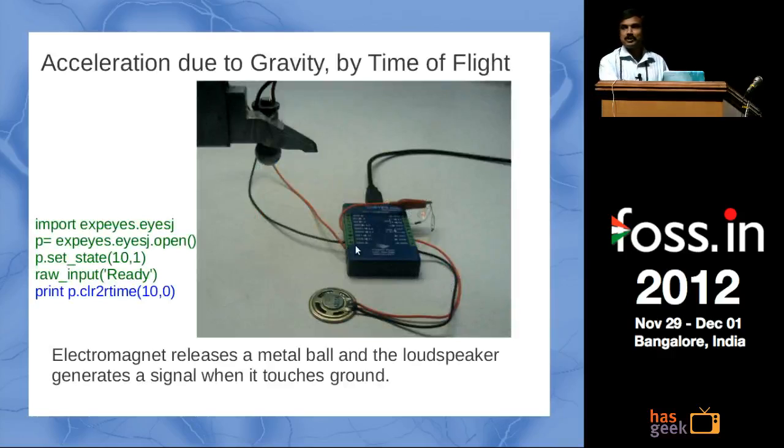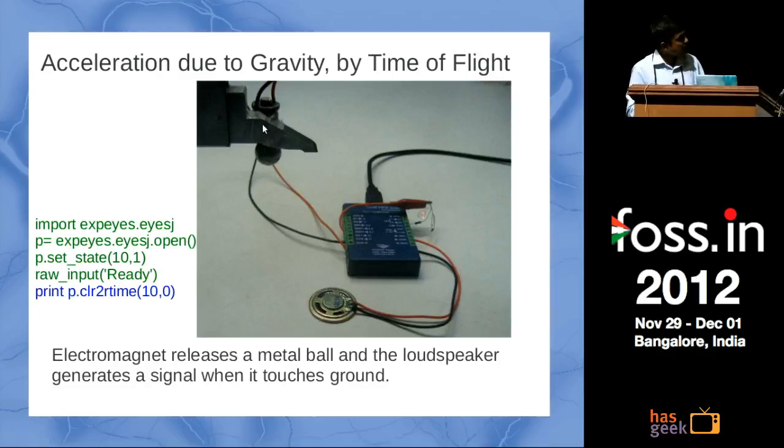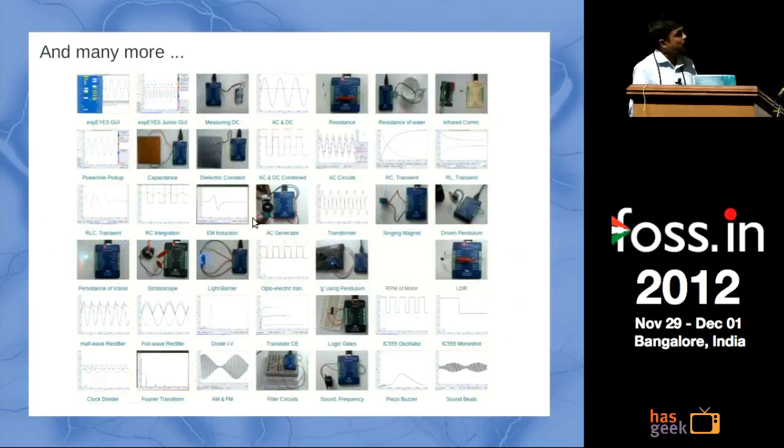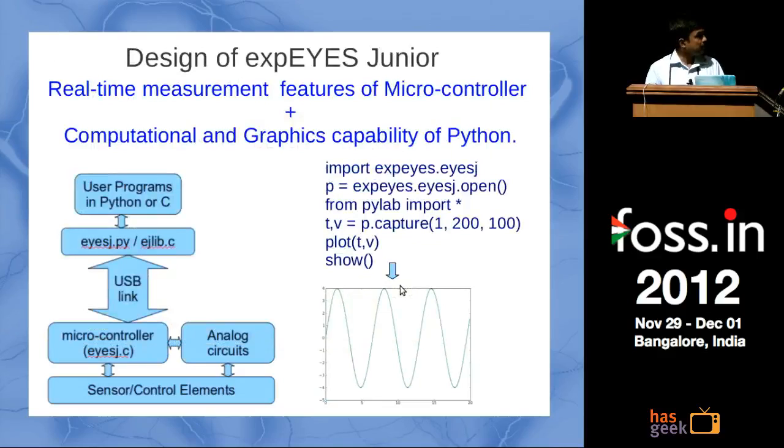This is something totally different, not from electronics. There is a small metal ball hanging here by using an electromagnet. Under software control you can just release this, it will drop down and hit here, and that will induce a signal on this loudspeaker which acts as a sensor. You can measure this time of flight with an accuracy better than a millisecond. From this time of flight, one can calculate the acceleration due to gravity. It is a very simple experiment. Many more are documented, you can see the website. Around 50 are done and documented.